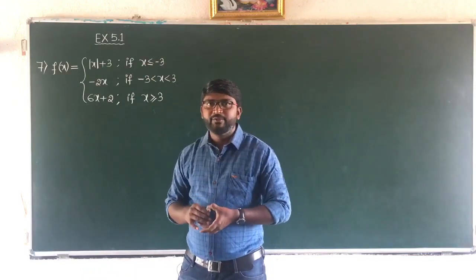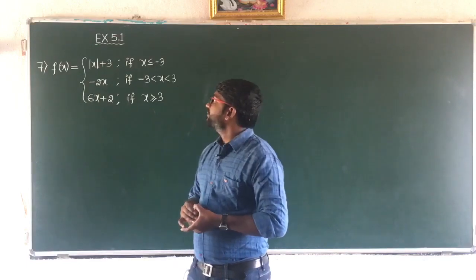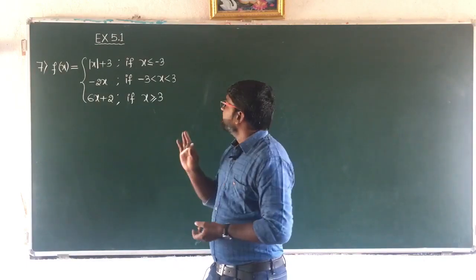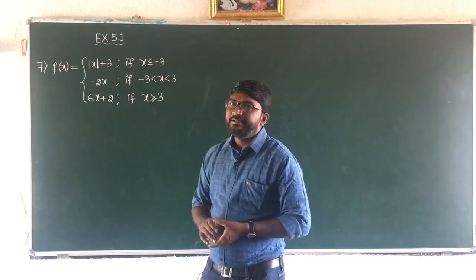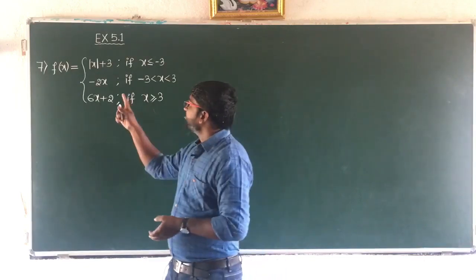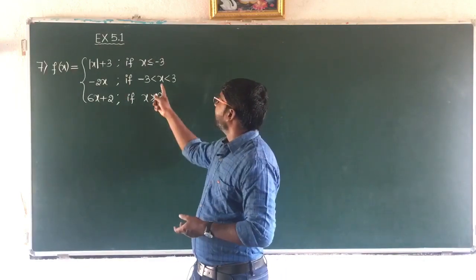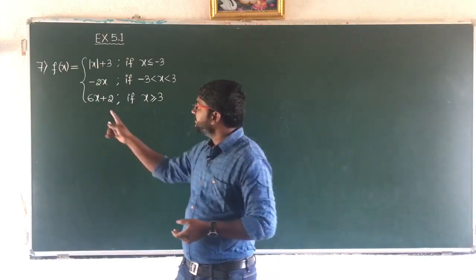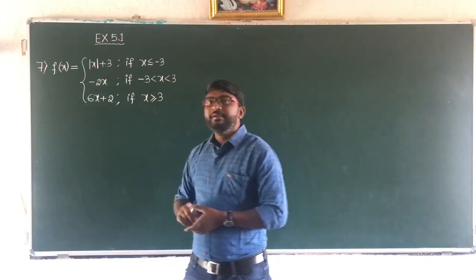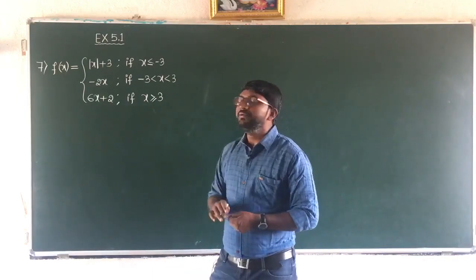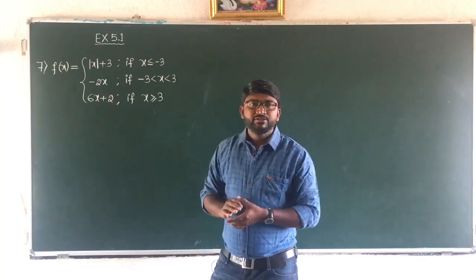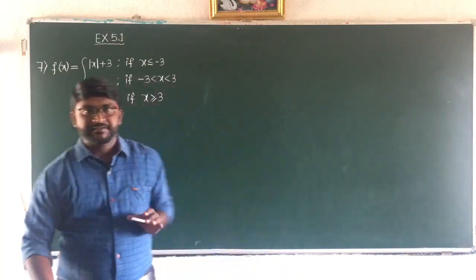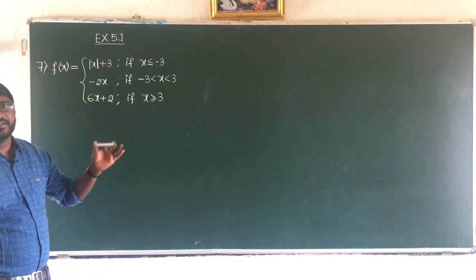The given problem is f of x, which is equal to mod(x+3) if x is less than or equal to minus 3, and minus 2x if x lies between minus 3 and plus 3, and 6x plus 2 if x is greater than or equal to 3. Here overall we get 5 cases if we consider c as any real number.